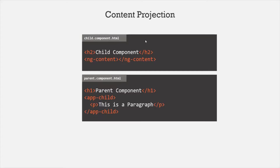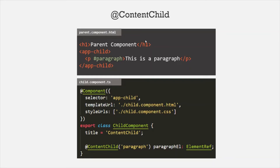Now let's understand what is the use of @ContentChild decorator. We use @ContentChild decorator to access HTML elements, components, or directives from the view template of the parent component in the component class of the child component. Here we have the view template of the parent component, and in this view template we are using the selector of the child component. Inside this selector, we are specifying a paragraph element — this is the projected content. On this paragraph element, we have used a local reference variable. We want to access this paragraph element in our child component class. We cannot use @ViewChild decorator here, because this HTML is not the view for the child component — it is the view for the parent component. But we want to access this HTML element in the component class of the child component, and for that we can use @ContentChild decorator.